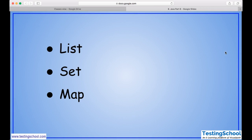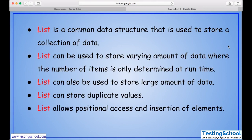First we'll look into List. List is a common data structure used to store a collection of data. List can be used to store a varying amount of data where the number of items is only determined at runtime. It can store multiple sets of data and large amounts of data. List can store duplicate values and allows positional access and insertion of elements by using index position.